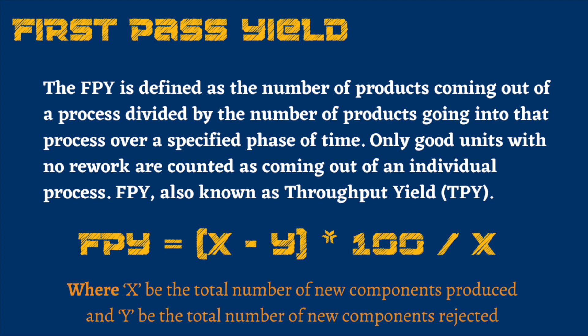First pass yield is defined as the number of products coming out of a process divided by the number of products going into the process over a specified period of time. You should note that only good units with no rework are counted as coming out of an individual process.